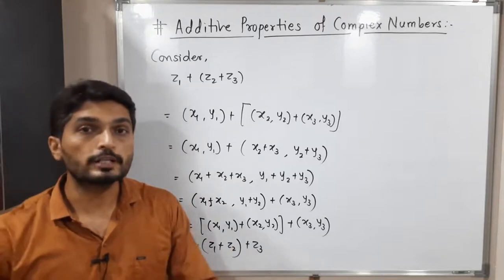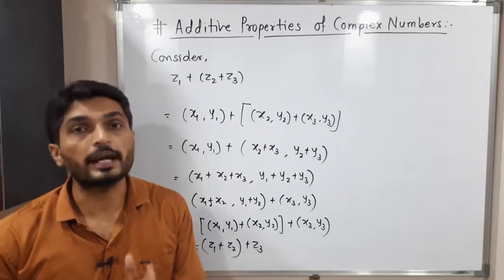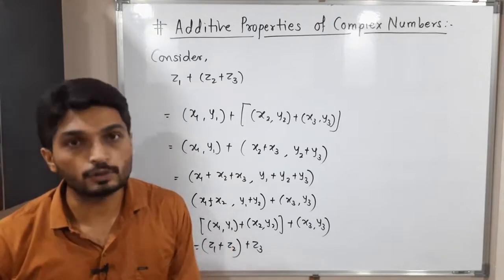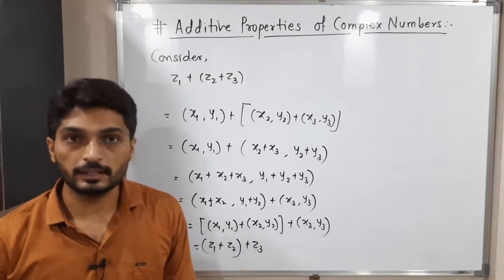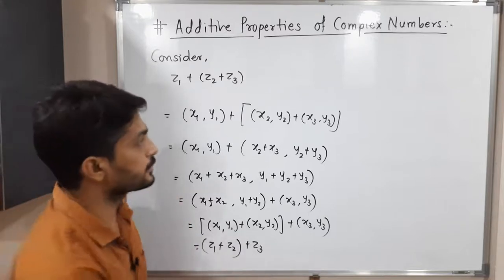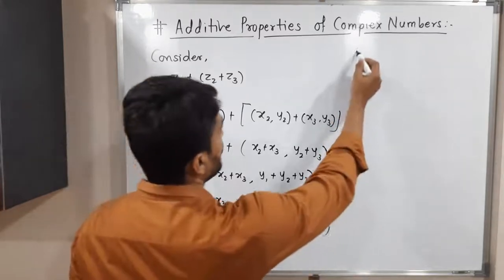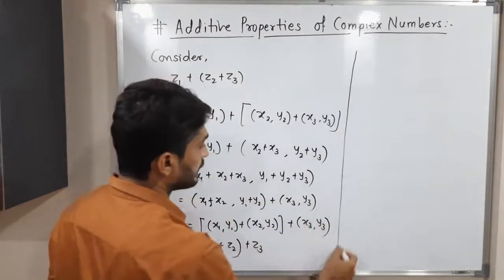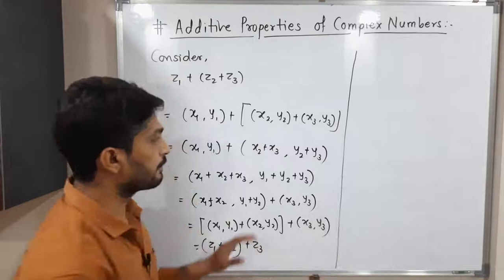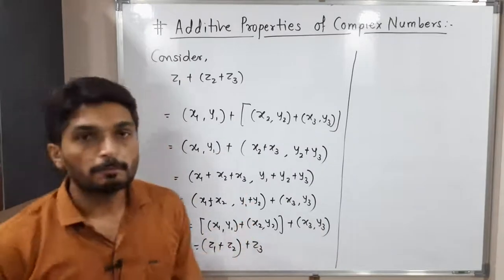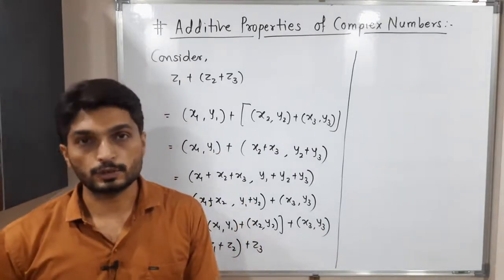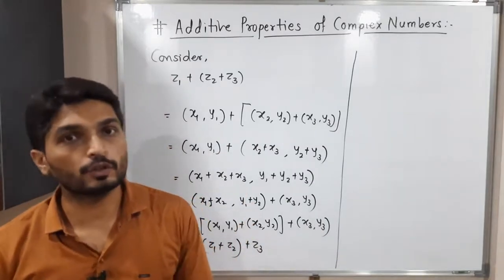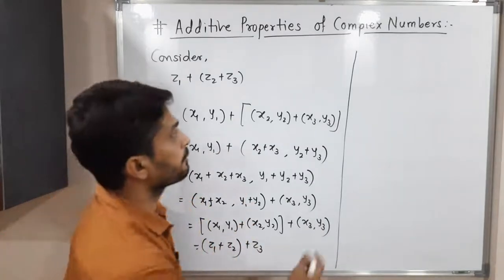We started with Z1 plus (Z2 plus Z3) and finally obtained (Z1 plus Z2) plus Z3. That is called the associative property, and addition is associative in C.